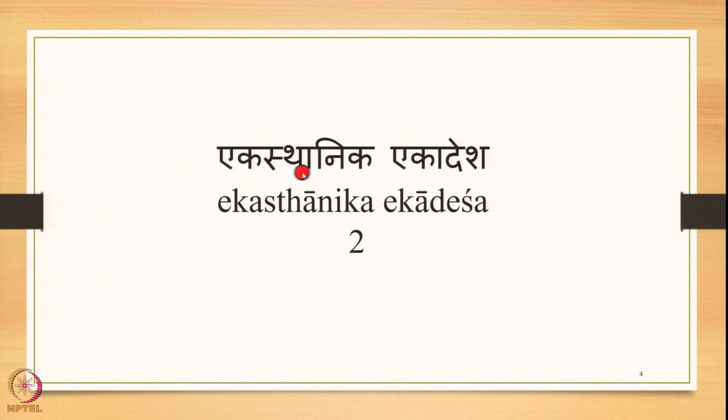Ekasthanika Ekadesha stands for one Sthani and one Aadesha — one substituent and one substitute, one substitute coming in place of one substituent. Dvishthanika Ekadesha stands for two substituents and one substitute, one substitute replacing two substituents.